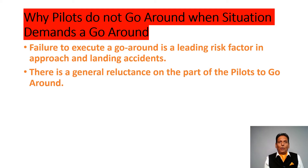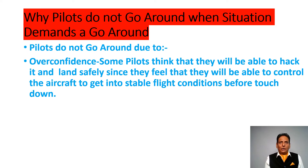Now we will discuss why pilots do not go around when the situation demands they do so. Failure to execute a go-around is a leading risk factor in approach and landing accidents. There is a general reluctance on the part of pilots to go around. Pilots do not go around firstly due to overconfidence — some pilots think they will be able to land safely since they feel they can control the aircraft and get into stable flight conditions before touchdown.